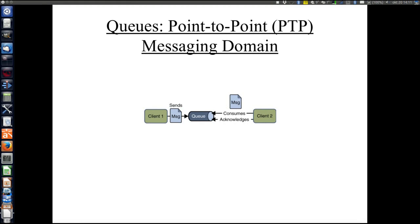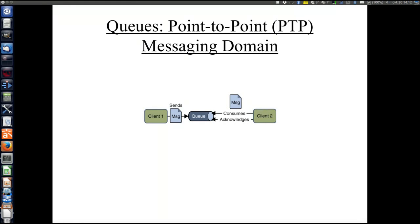In queue-based communication, one client sends to one other client — not one client to all clients as in the pub-sub messaging domain using topics. Client 1 wants to send a message to client 2 by sending to a particular destination identified by the queue. Client 2 can then receive or consume the message by asking the queue for messages. Note that client 1 and client 2 are decoupled; they only identify the queue, they do not identify each other. It is also possible that client 2 registers a listener that is notified when a message arrives to the queue.